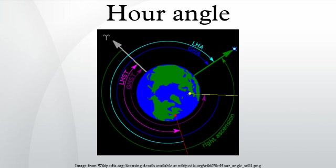In celestial navigation, the convention is to measure in degrees westward from the prime meridian, the local meridian, or the first point of Aries.